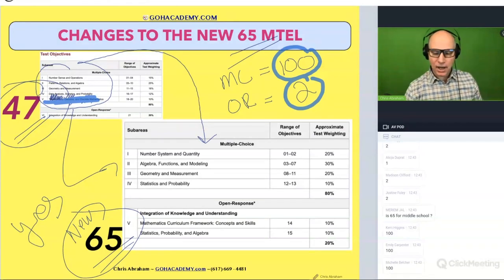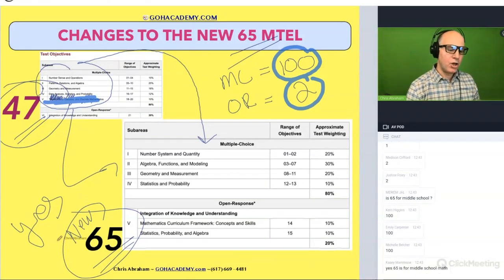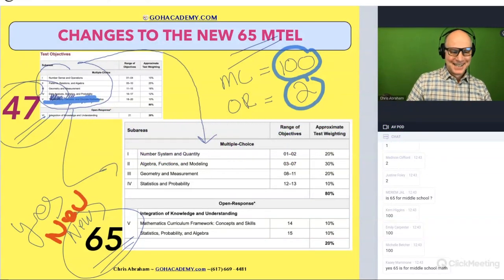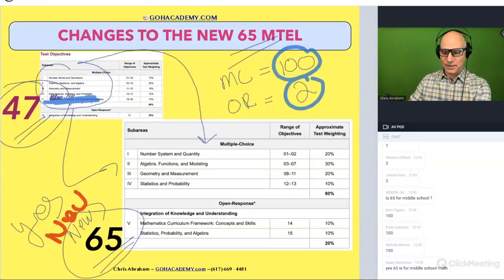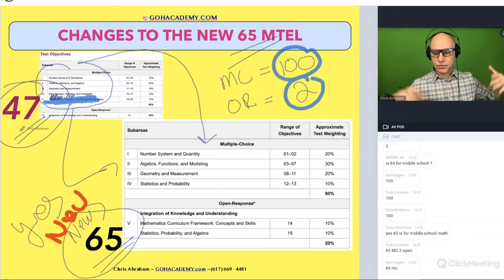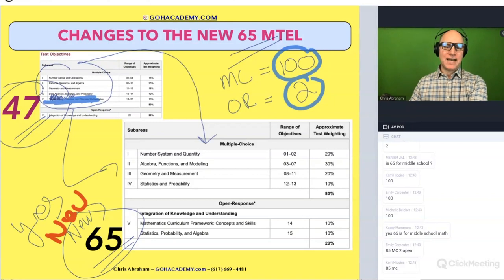Okay, now let's talk about—let's take a moment and talk about the new new 65. Now what is the new new 65? What's that mean? It's for middle school, yes. So the 65, the 47 for middle school.